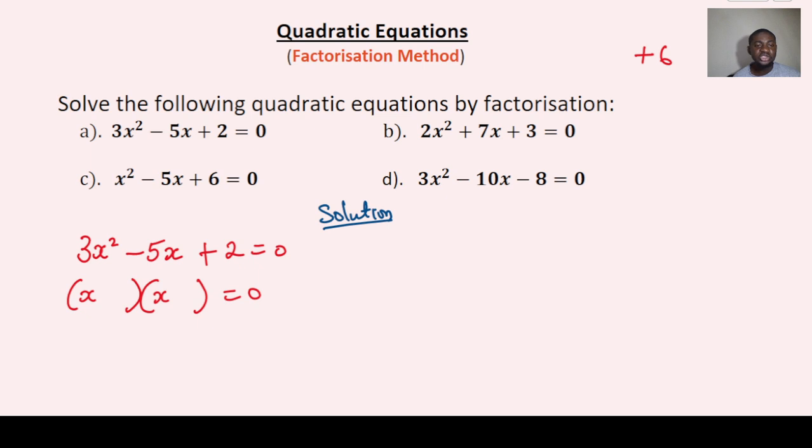you consider the factors of plus 6 that can give you minus 5 when added together. So the factors of plus 6 is 3 and 2. To give you minus 5, it has to be that they are both minus, that is minus 2 and minus 3.